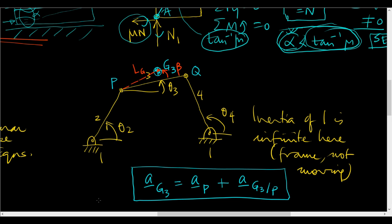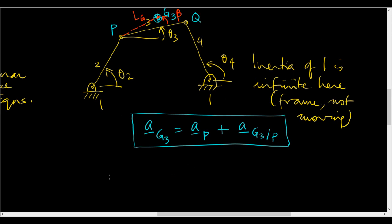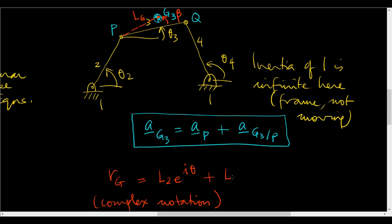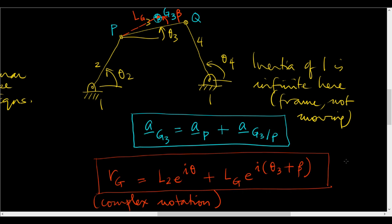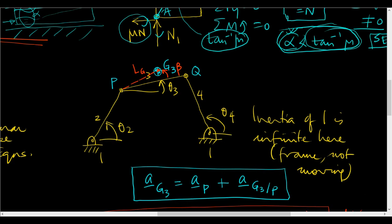Once I have this, I can differentiate twice and get the acceleration of G. Because from other equations I have theta3-double-dot, I put those in and get the acceleration of G. Once I have the acceleration of G and the angular acceleration of that link, I have to come back and draw a free body diagram.